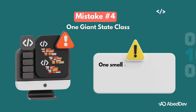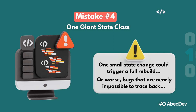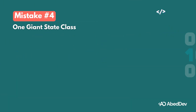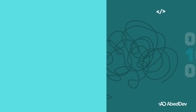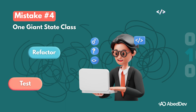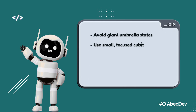You change the theme and the cart widget rebuilds — because they all share the same state class. Debugging becomes a nightmare; one small state change could trigger a full rebuild. The right way is to split by feature: each piece of your app becomes isolated, testable, and maintainable. Use a small, focused cubit or bloc for each feature. Keep your state shallow, specific, and modular — that's how you keep your code clean.